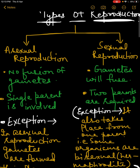As you see here, there are two types of reproduction — one is sexual and the other one is asexual. Asexual reproduction is the one where no fusion of gametes will take place, and sexual reproduction is the one where gametes will fuse.